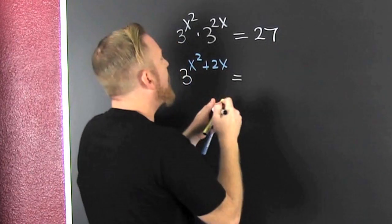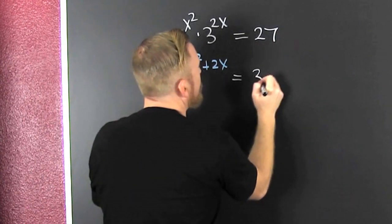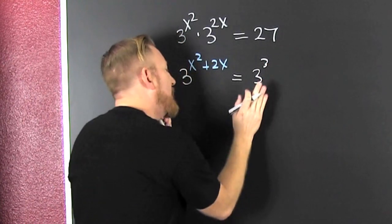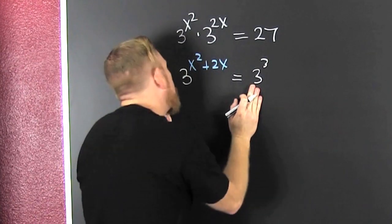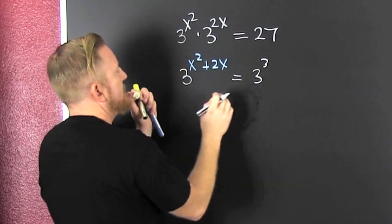Over here on that right hand side, 27 is really 3 to the 3. Wait, let's see. 3 times 3 is 9, times 3 is 27. Very nice. Now what?